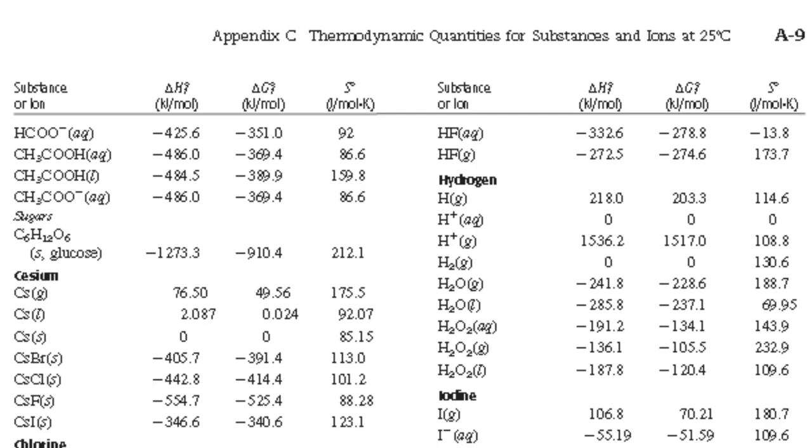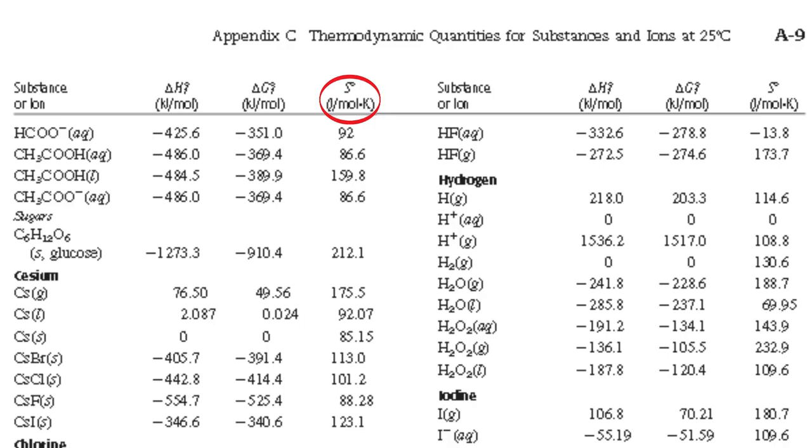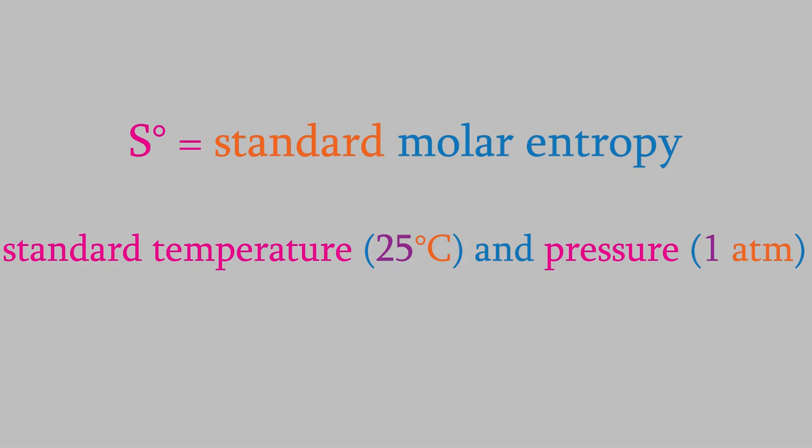You can actually see that in the data in Appendix C. Notice that the entropy in Appendix C has the symbol S with a little circle next to it. We usually call that symbol S-naught. The little circle means that the data was measured at standard temperature and pressure. That means 25 degrees Celsius and 1 atmosphere. If we do an experiment at any other temperature, the entropy will be different. We'll see exactly how the temperature changes the entropy in the next video. But for now, we'll just work on the problems where the temperature is at 25 Celsius.